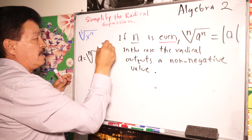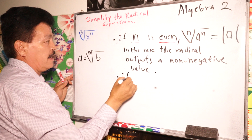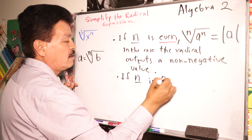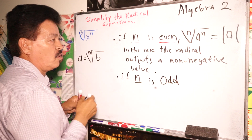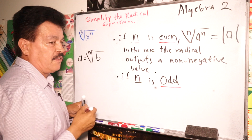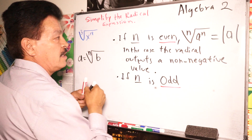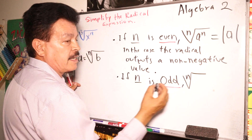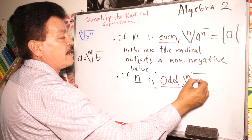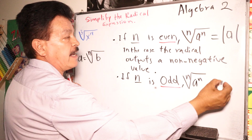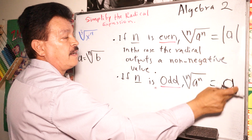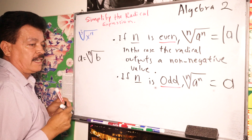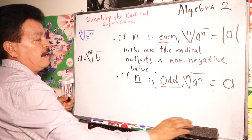And if n is odd, then the nth root of a to the n equals simply a. Notice the difference — with an odd index there is no absolute value, just a.